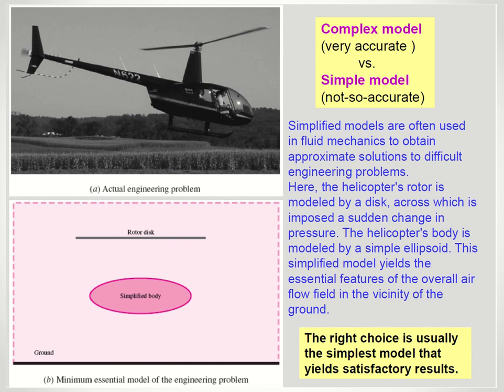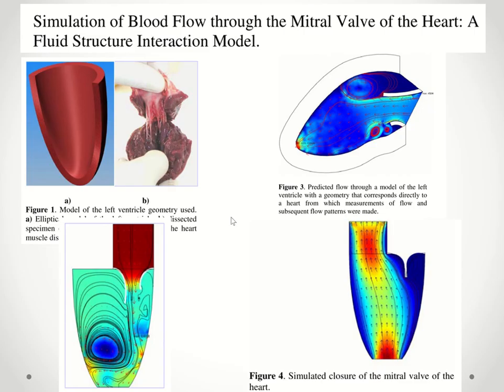Here's an example of modeling a ventricle, or blood flow through the mitral valve and in the ventricle of the heart. Again, this model could be very complex, or it could be simplified into something as simple as a geometrical shape that simulates the ventricle inside the heart. It could even be further simplified as a 2D model where this represents the ventricle of the heart.